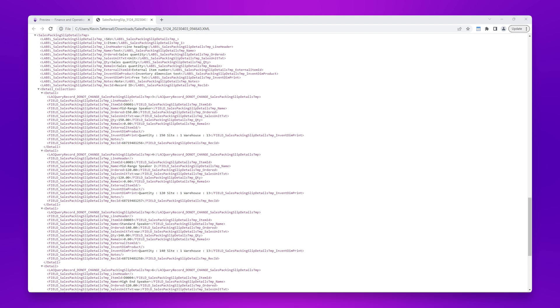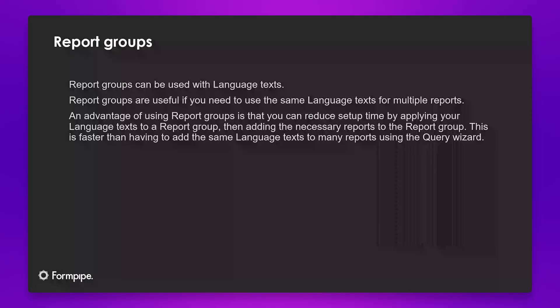So we'll move on to our next scenario, which is report groups. Report groups can be used with language texts. Report groups are LAC functionality, not Dynamics 365 Finance and Operations functionality. And report groups are useful if you need to use the same language texts for multiple reports. An advantage of using report groups is that you can reduce setup time by applying your language texts to a report group and then adding the necessary reports to the report group. This is faster than having to add the same language texts to many reports using the query wizard.